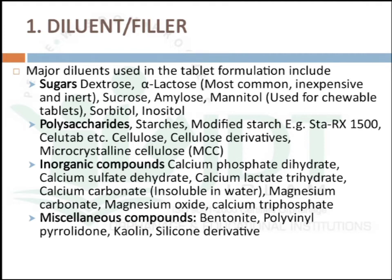Materials used as diluents or fillers include: sugars like dextrose, lactose, sucrose, amylose, mannitol, sorbitol, or inositol; polysaccharides like starches, modified starches, cellulose, cellulose derivatives, and microcrystalline cellulose; inorganic compounds like calcium phosphate dihydrate, calcium sulfate dihydrate, calcium lactate trihydrate, calcium carbonate, magnesium carbonate, magnesium oxide, calcium triphosphate; and miscellaneous compounds like bentonite, polyvinylpyrrolidone, kaolin, or silicon derivatives.